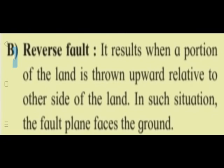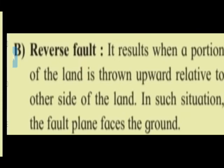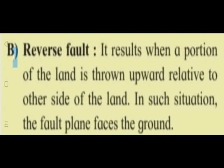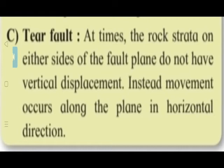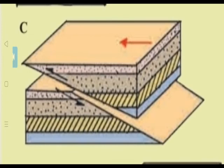Diagram B - reverse fault: it results when a portion of the land is thrown upward relative to the other side. In this situation, the fault plane faces the ground.